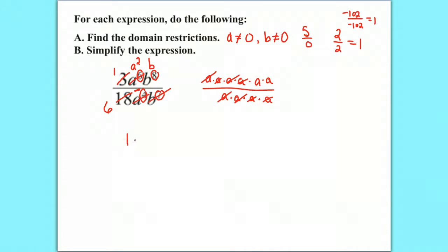So your final answer, you're going to just leave everything in the numerator that's there, 1A squared B over 6. And you actually don't have to write the 1. Usually we don't. If it's a coefficient of 1, we don't write it. And so you'd end up with A squared B over 6 would be your answer for part B, the simplified expression.